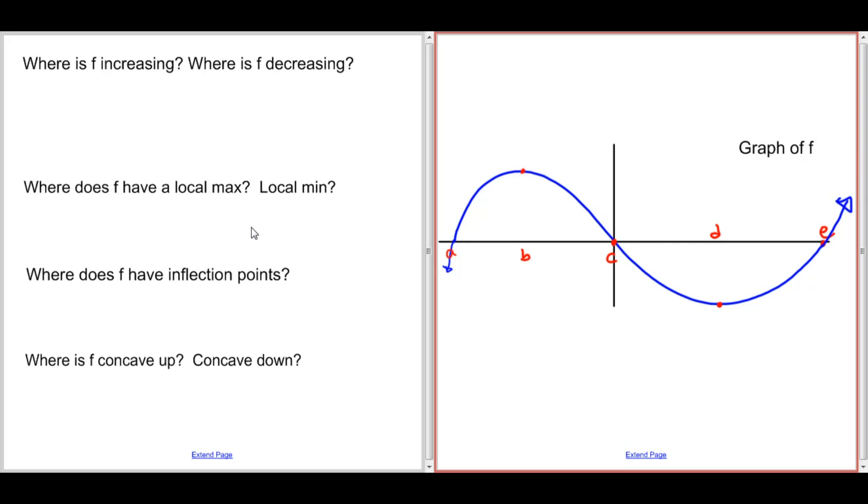So let's start with where f is increasing and where it's decreasing. Well, we know that f increases when f prime is positive, because f prime is the slope of f. If you look at our graph,